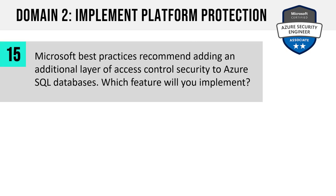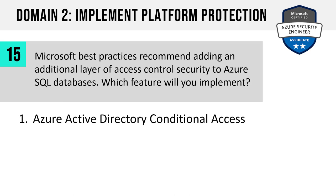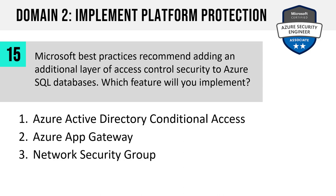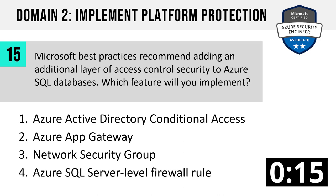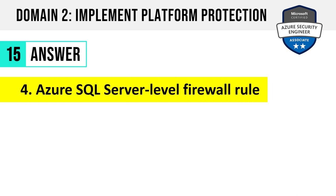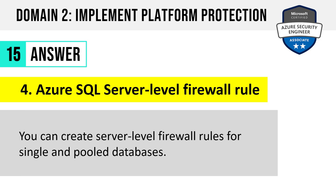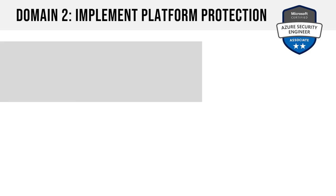Number 15. Microsoft best practices recommend adding additional layers of access control security to Azure SQL databases. Which feature will you implement? Azure Active Directory Conditional Access, Azure App Gateway, a network security group, or Azure SQL Server-level firewall rule? The answer is four: Azure SQL Server firewall rule. You can create a server-level firewall rule for single databases and pooled databases. For Azure SQL, the resource firewall feature works at the server level and at the database level.